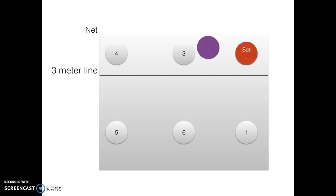But when the setter starts at the front, like on position 2, you only have two attackers on 4 and 3. That's because the three players that start in the back cannot jump attack from within the three meter line.